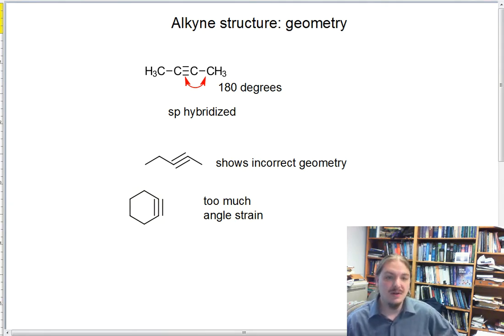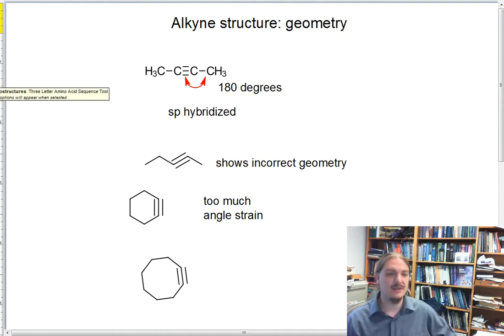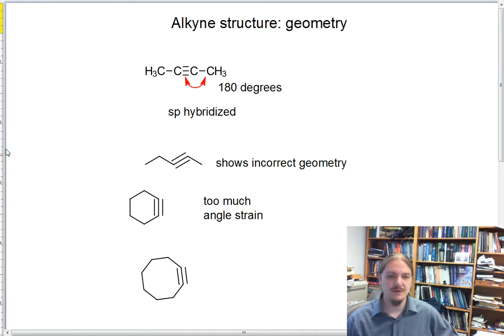The smallest commonly occurring cycloalkyne is cyclooctyne, which is flexible enough to have the alkyne functional group in it.